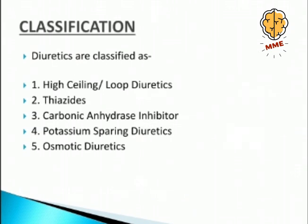Diuretics are classified as: 1. High ceiling or loop diuretics, 2. Thiazides, 3. Carbonic anhydrase inhibitors, 4. Potassium sparing diuretics, and 5. Osmotic diuretics. Among all these, loop diuretics and thiazides are the most important ones, and most exam questions will come from these two. Today we will study loop diuretics and thiazides.